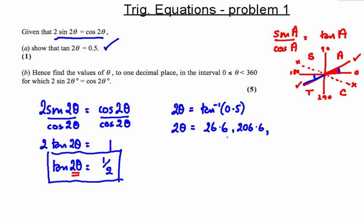Once we have the first two angles, everything else is easy. All we need to do is keep revolving around the circle. If we add on 360, we will get back to one, and adding 360 again gets back to the other. So we can keep adding 360 to these to find as many angles as we want — 26.6 plus 360, and from 206.6 plus 360, and so on, adding 360 to the original pair.